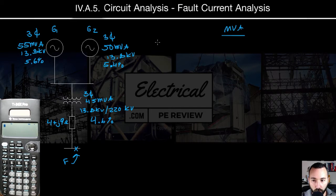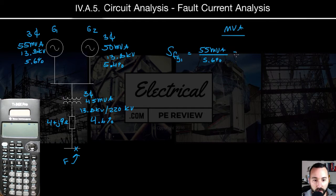So starting with G1, we can say SFG1 is going to equal 55 MVA divided by the impedance, 5.6%.